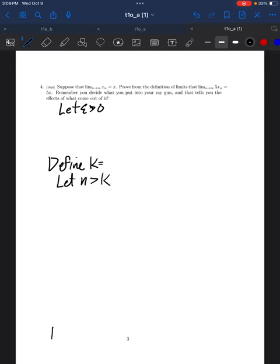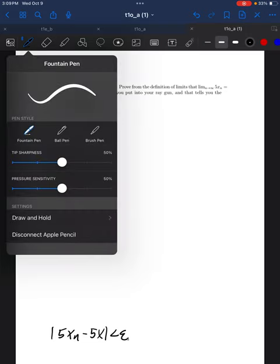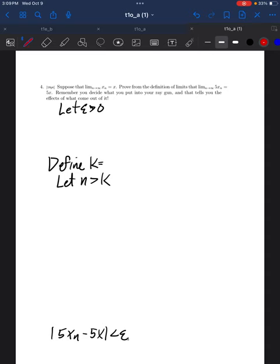And then we're going to let n be greater than k. Okay, we want to conclude that 5xn minus 5x is less than epsilon. What do we know? We know that xn converges to x. So we know I'm going to write in my scratch paper in red.